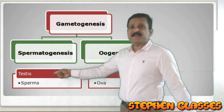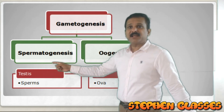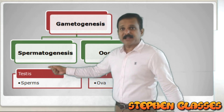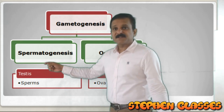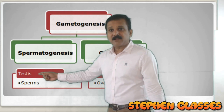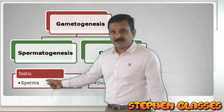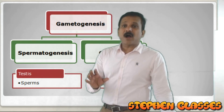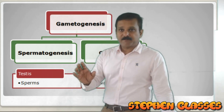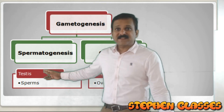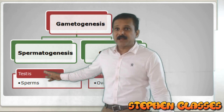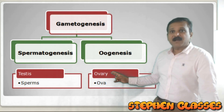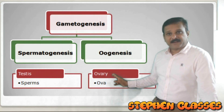The testis can be considered the primary reproductive organ in the male, because it is the organ which produces the gamete. Any organ which produces the gamete is called a primary reproductive organ. In the case of male, testis is the primary reproductive organ, whereas in the female, the ovary is the primary reproductive organ.